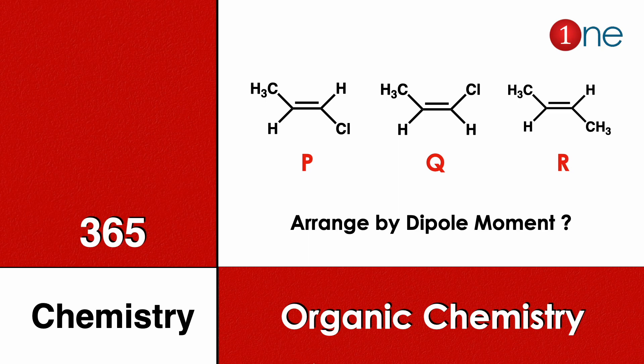Welcome to One Chemistry. This is the 365 Chemistry Series — organic chemistry questions for you. Here you have three different alkenes: the first one has methyl and chlorine in trans configuration, the second one has methyl and chlorine in cis configuration, and the third one has both methyls in trans configuration. You should determine the order of the dipole moments.